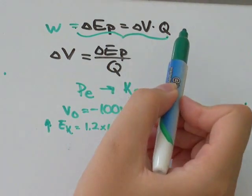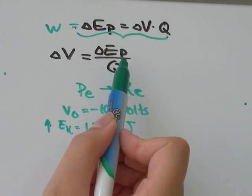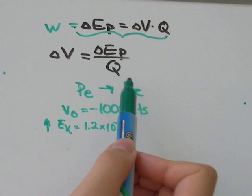we get that the change in voltage equals the change in electric potential divided by the magnitude of the charge.